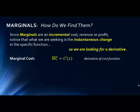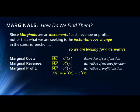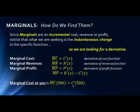Marginal cost equals the derivative of the total cost function. Marginal revenue equals the derivative of the revenue function. Marginal profit equals the derivative of the profit function, which can also be expressed as the derivative of revenue minus the derivative of cost, since profit equals revenue minus cost. So the marginal cost at 500 is C′(500).